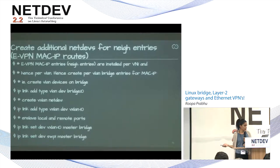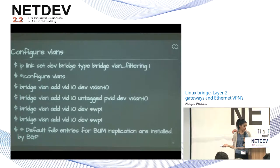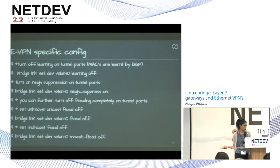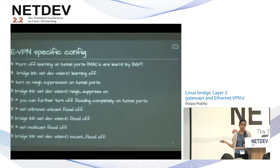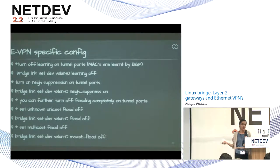In interest of time, rushing through these slides: for eVPN-specific config, you want to turn off learning because BGP is going to learn for you — especially for remote MACs, so you turn off learning on the VXLAN tunnel ports. You can turn off flooding since ARP and ND can be proxied, so you can completely turn off flooding.